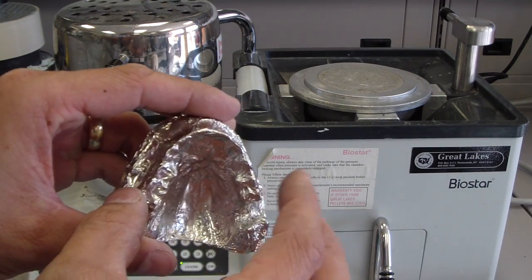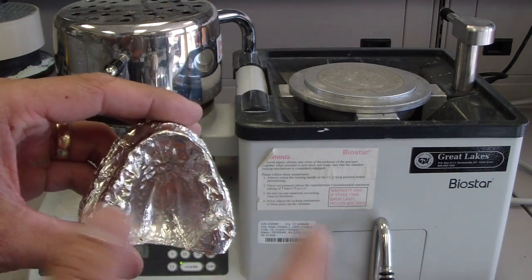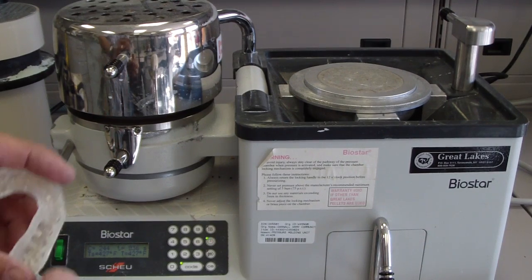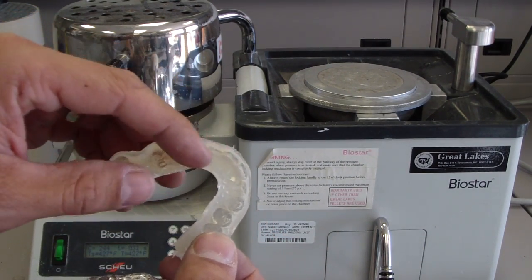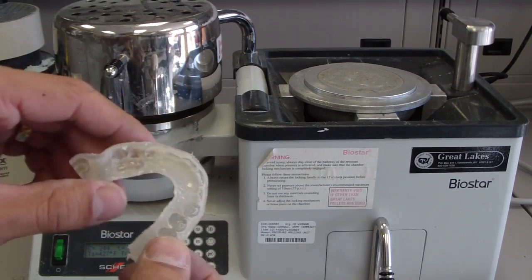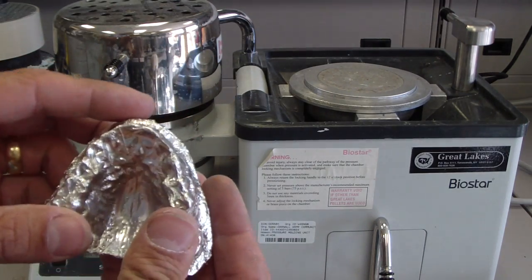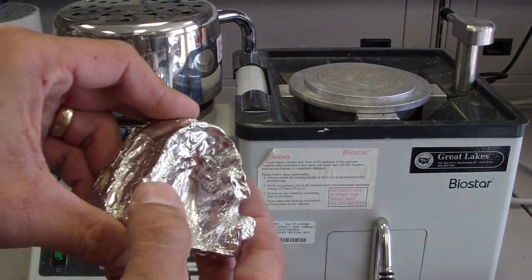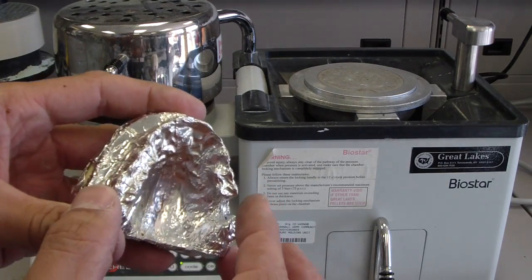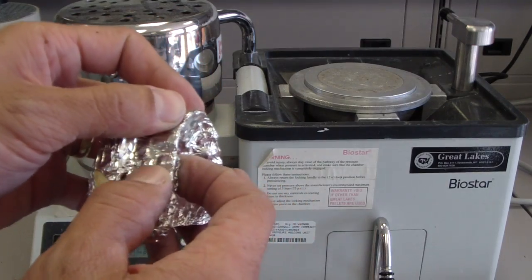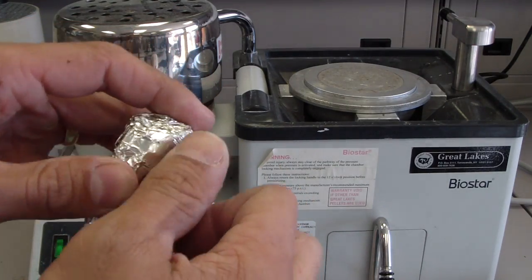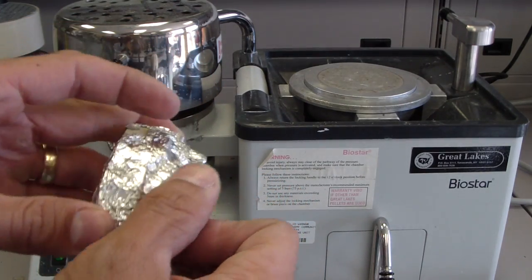The company suggests wrapping the cast in tin foil like a baked potato to ensure a nice clear bruxism splint. In comparison to this one where I didn't use tin foil during vacuum forming, although the foil is difficult to remove after forming, it makes a huge difference in the clarity of the prosthesis.